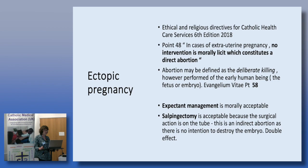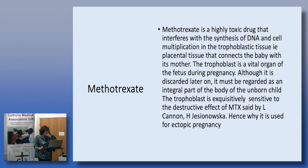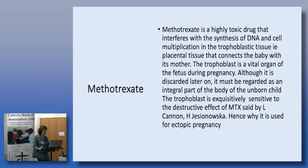Methotrexate is used in autoimmune diseases like rheumatoid arthritis and also in ectopic pregnancy, though it is unlicensed. It is a highly toxic drug that interferes with DNA synthesis, attacking any rapidly dividing cells. The trophoblast is a rapidly dividing organ and is exquisitely sensitive to methotrexate's destructive effect. Although the trophoblast is discarded later, it must be regarded as an integral part of the body of the unborn child — that's why methotrexate is used in ectopic pregnancy.